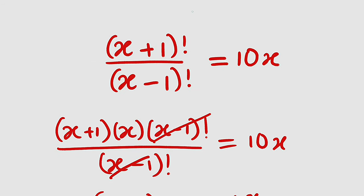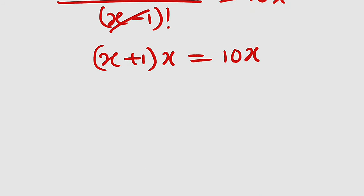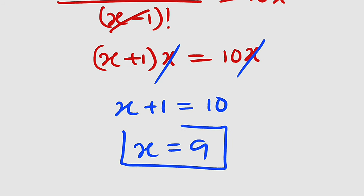0 minus 1 is -1 and we have -1 factorial which is undefined in the factorial world. Factorials are only defined on whole numbers. Therefore we can divide both sides by x. This will cancel, we have x+1 equal to 10. Subtracting 1 from both sides, we have x equal to 9.